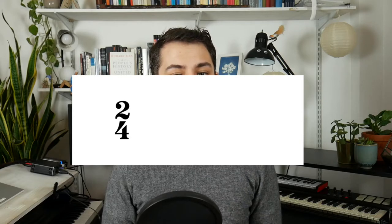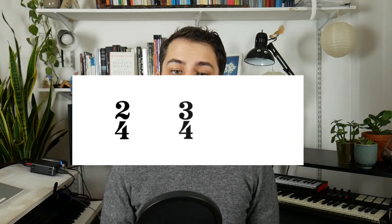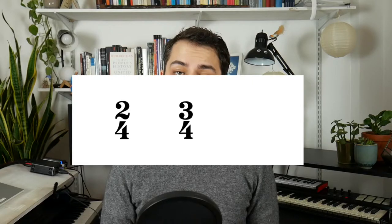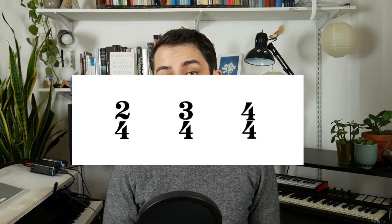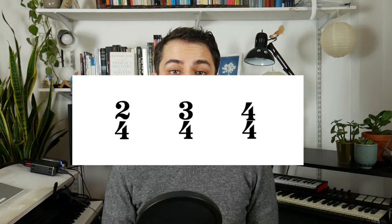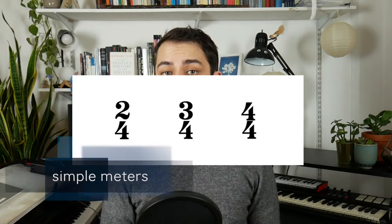Each of these time signatures still employ the quarter note pulse, so we won't need to make any adjustments to our bottom number. However, we will be changing how many beats are included in each measure, so for that we'll have to adjust the top number. In a 2/4 meter, there are 2 beats per measure. In 3/4, there are 3 beats per measure. And as we know, in 4/4, there are 4 beats per measure. Each of these are what we call simple meters, and the top number indicates how many beats are in each measure.